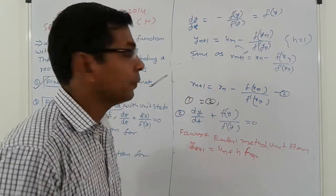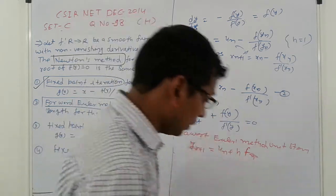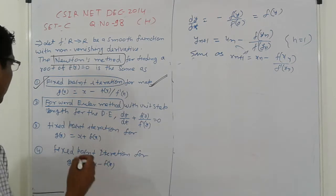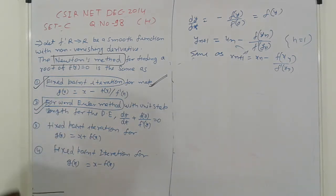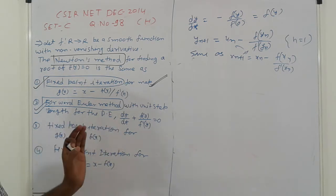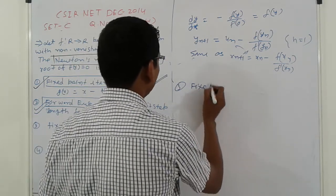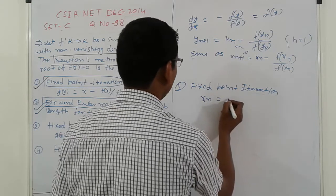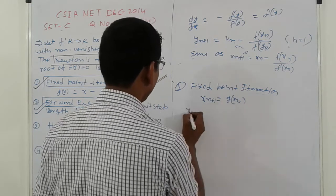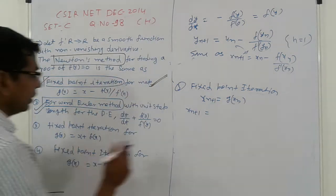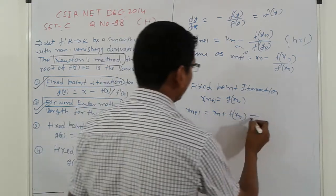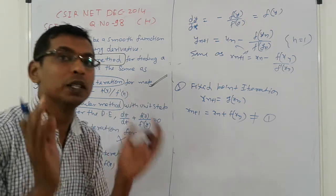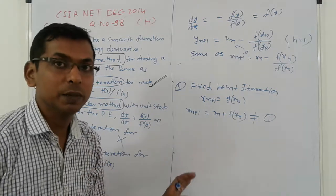Next, go to option three. Checking fixed point iterations again — this fixed point iteration does not match Newton's methods. So that answer is wrong; option three is wrong.